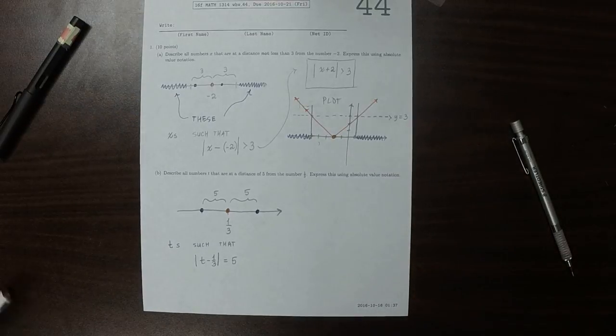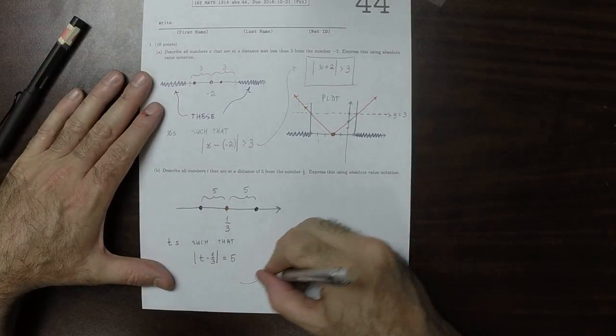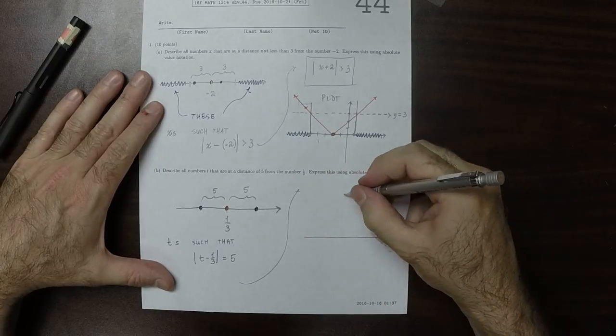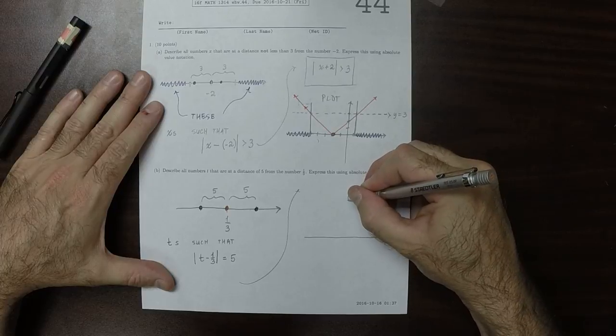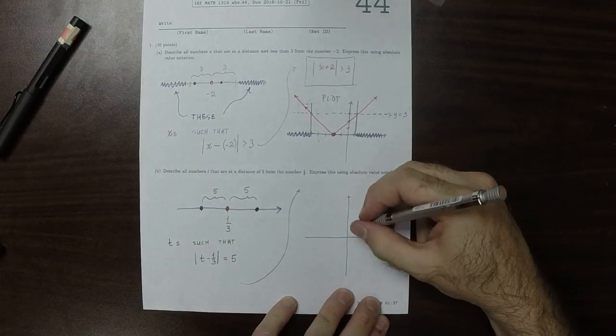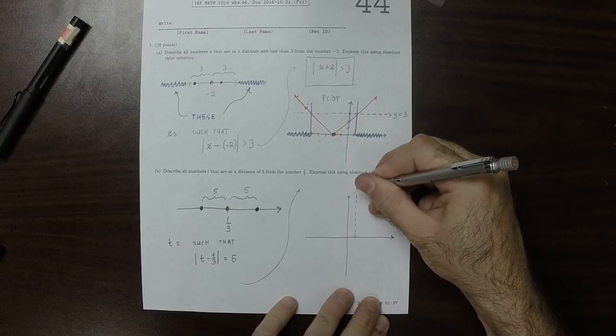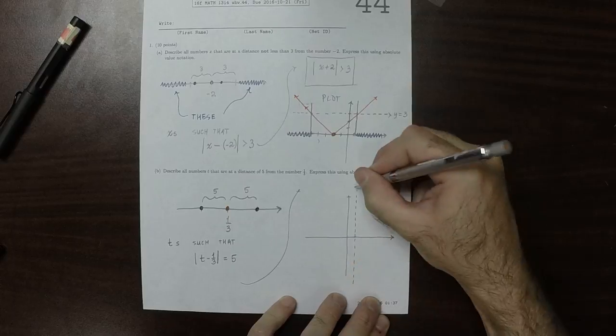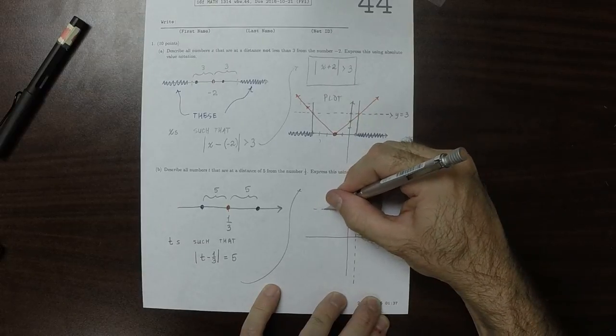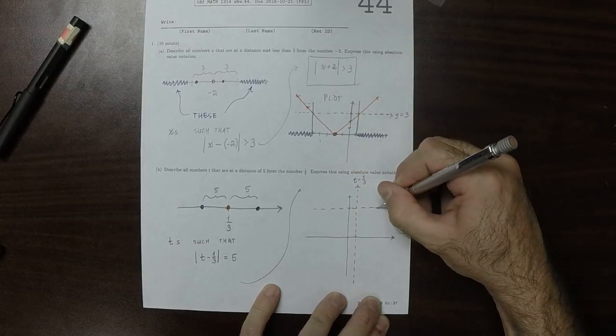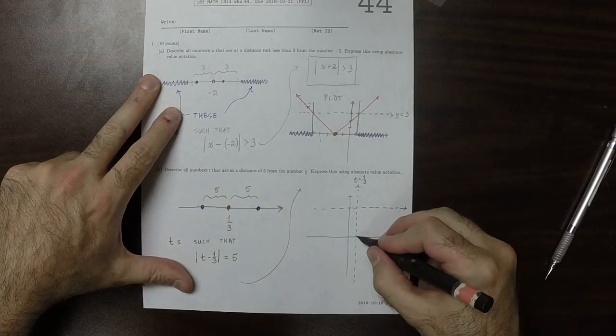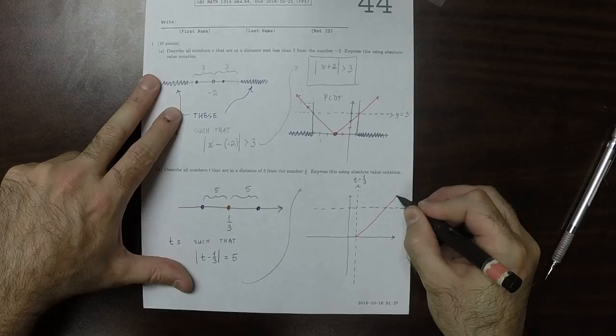Now you might wonder, why does the picture look like that? The reason is because... So now here is 1/3. And here is 5.